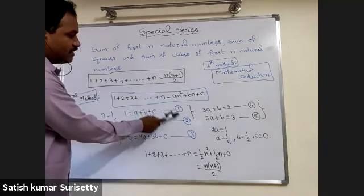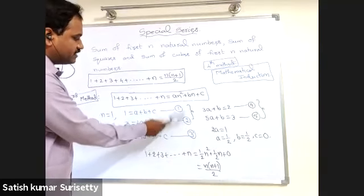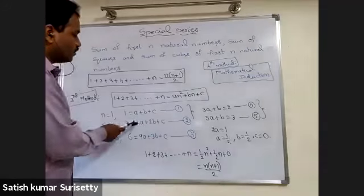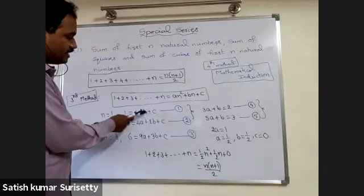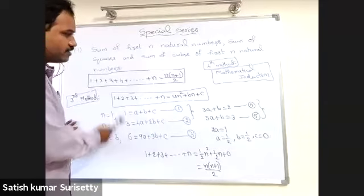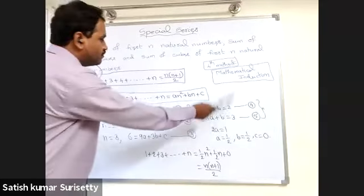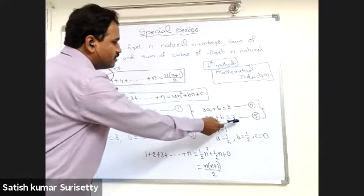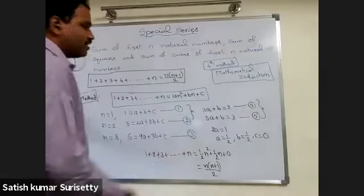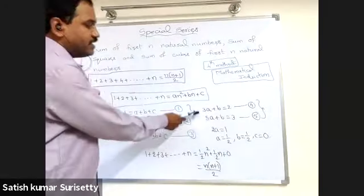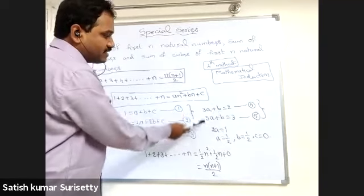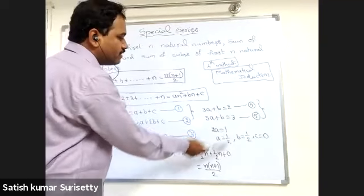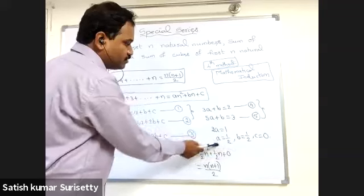Use the first and second equations to eliminate c: 3a plus b equals 2. Use the second and third equations: 5a plus b equals 3. Now eliminate b by subtracting the two equations: 2a equals 1, so a equals 1 by 2.